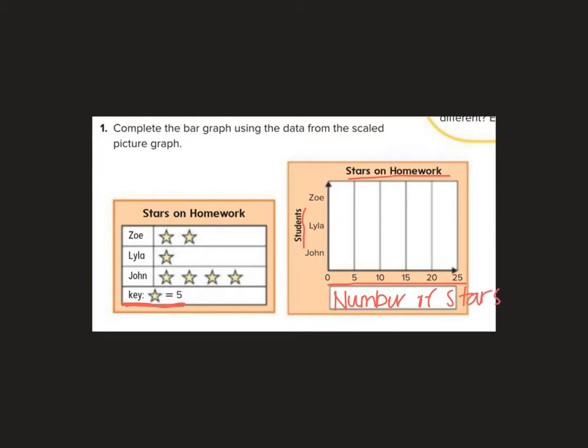Let's look. Zoe has 10 stars on her homework, so Zoe's bar should go up to 10. Lila's has five stars. So Lila's bar is going to go up to five. Notice they should be about the same width. They need to have a little space between them. And John, look at this, John. 5, 10, 15, 20 stars on John's homework. He must be a hard worker. There we go. So there we did. We moved our data from a picture graph to a bar graph.